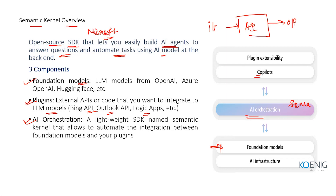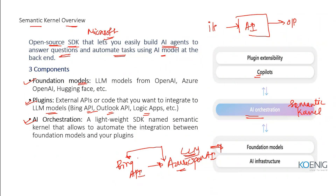The AI orchestration is basically the Semantic Kernel, which automates the integration between the foundation model and the plugins you have used. For example, if you have an Azure OpenAI model and you're passing input via the Bing API, the Semantic Kernel orchestrates the integration between the foundation model and the plugin being passed.